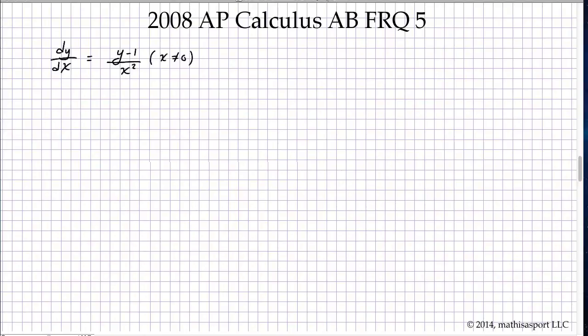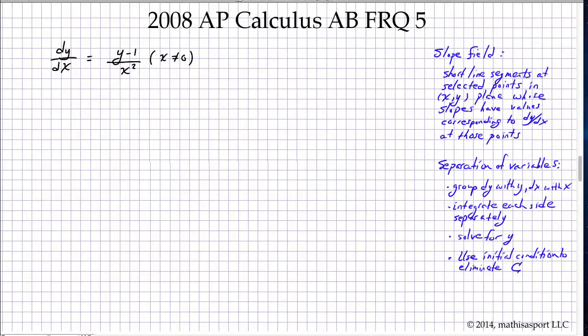We're given a differential equation represented here, and from that we are going to be sketching slope fields as well as using separation of variables to solve the differential equation and then say something about its asymptotic values. So here's the sort of information that we're going to find useful, and because part A starts with a slope field, I've just pre-drawn a grid where the dots indicate where they would like the slope field drawn.